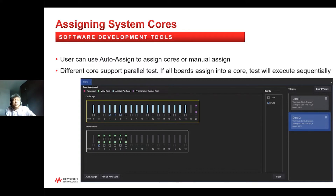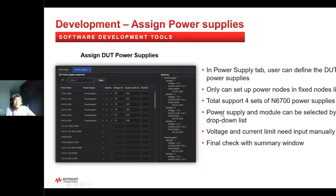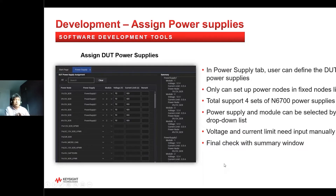The core uses the second channel of the BAM card with its flat four-to-six pin cards — so these two boards use two cores and the test will be executed in parallel. In the power supply window, the engineer will be able to assign the power supply. All boards' DO3 power supply will be defined in the power supply page; the power node list comes from the fixed nodes list. The i7090 fully supports four sets of Keysight's N6700 power supply. The power supply and module can be selected in the drop-down list, and the voltage and current limit must be input manually.